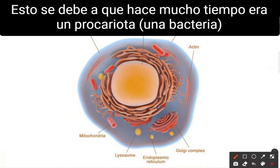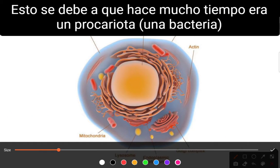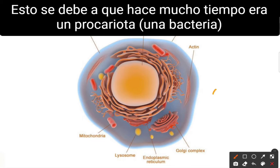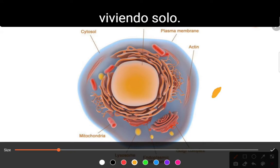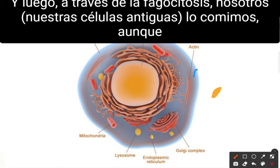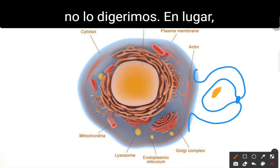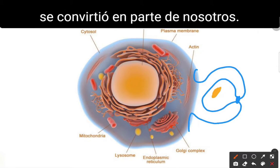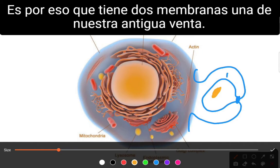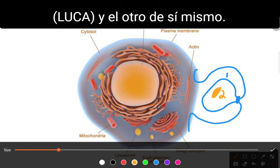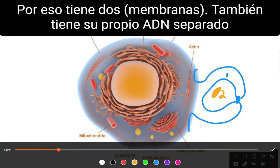This is because a long time ago it was a prokaryote — a bacteria living by itself. And then through phagocytosis, we ate it, although we did not digest it. Instead, it became part of us. That is why it has two membranes: one from our ancient cell, and the other from itself.